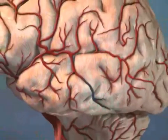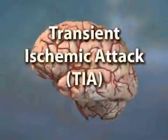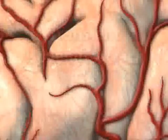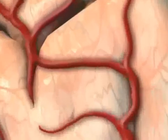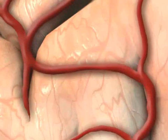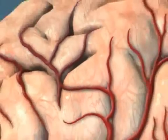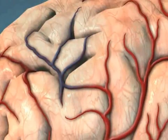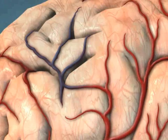Sometimes an individual will experience a transient ischemic attack, or TIA, which is temporary and improves before cells die. A TIA is a precursor to a thrombotic stroke or short-term embolus.